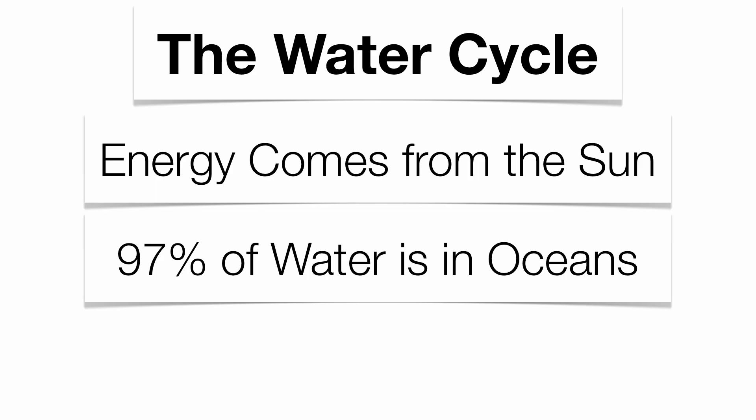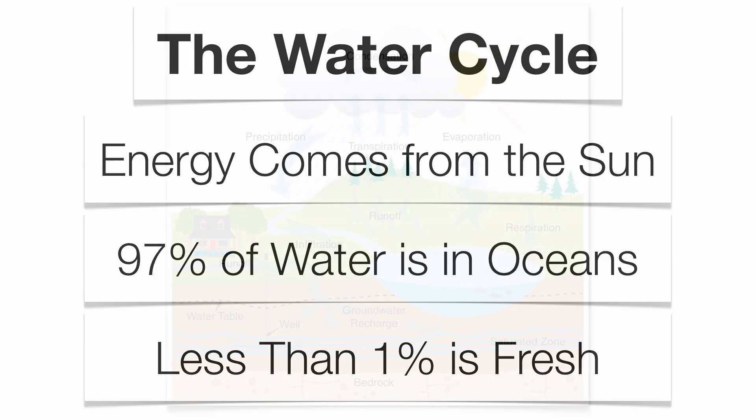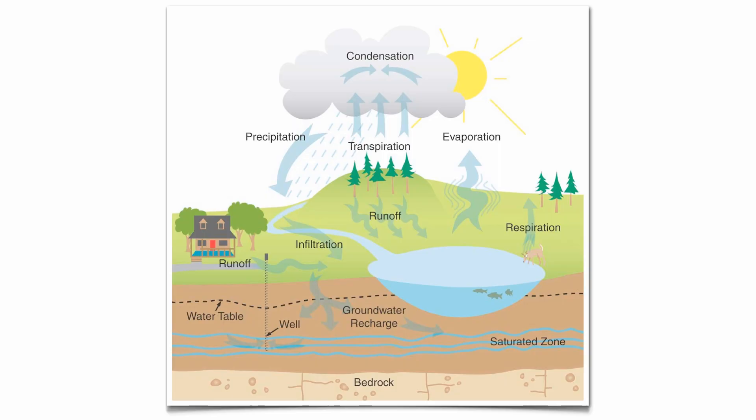Believe it or not, out of all the water that's on the planet, we can actually use less than 1% of it for human consumption. So let's jump into the water cycle and see all the different processes that go into it.